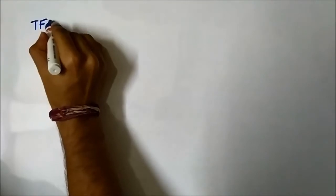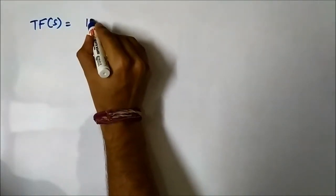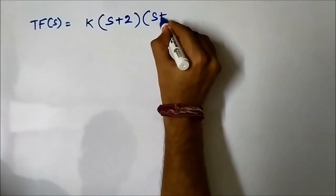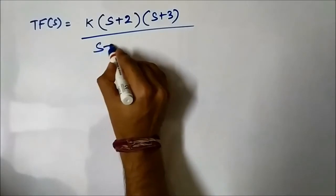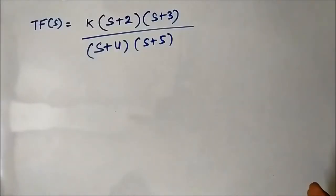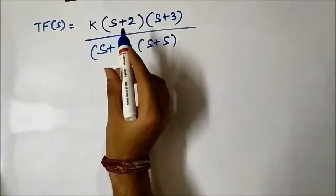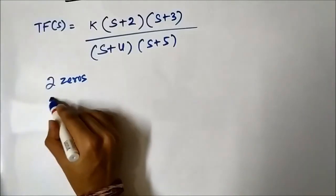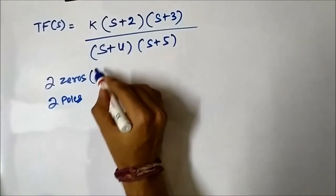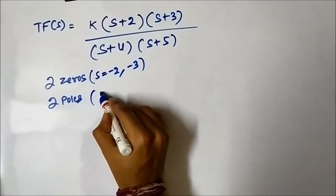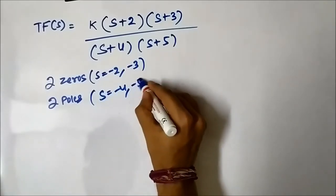Now let us consider another transfer function: (s+2)(s+3) / [(s+4)(s+5)]. Here we have equal numbers of poles and zeros — two zeros and two poles. The zeros are at s equals minus 2 and minus 3, and the poles are at s equals minus 4 and s equals minus 5.